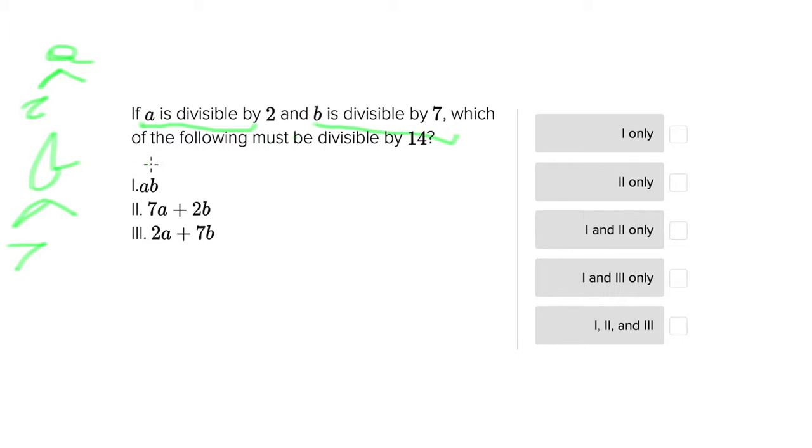And b here is divisible by at least 7 and another number that's not 1. And now we're asked, which of the following must be divisible by 14? So like usual with this sort of problem, we're going to go ahead and consider the first option, Roman numeral 1, and see whether or not this one produces a number that must be divisible by 14. So let's go ahead and try that.